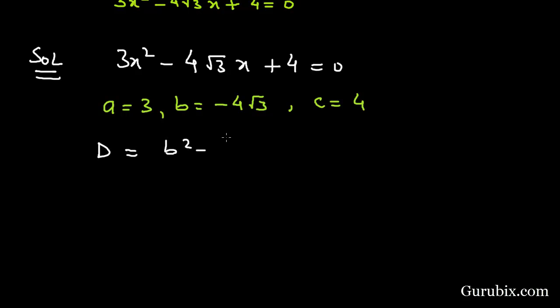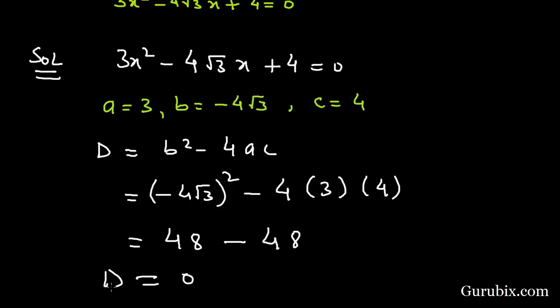The discriminant D = b² - 4ac. Substituting b = -4√3, a = 3, and c = 4, we get D = (-4√3)² - 4(3)(4) = 48 - 48 = 0. Therefore, D = 0.